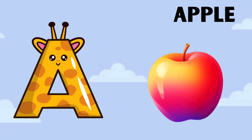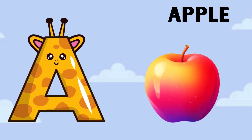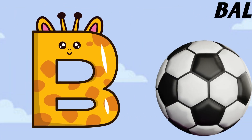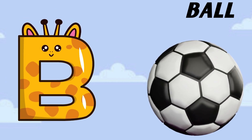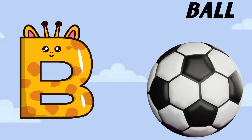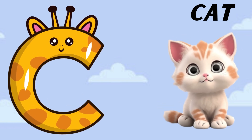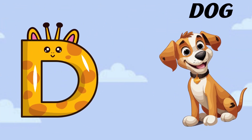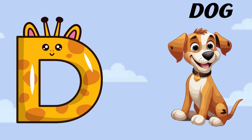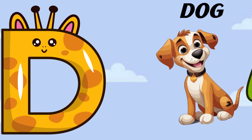A is for apple, a-a-apple. B is for ball, b-b-ball. C is for cat, c-c-cat. D is for dog, d-d-dog.